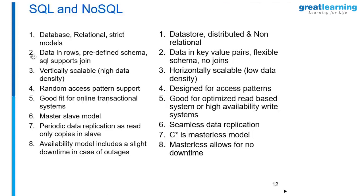A term to be used in the case of NoSQL is called write-time join versus read-time join. Every time a relational database has to pick this record, pick that record, put them together and return it back to you - and for values which don't change, you are continuously joining them again and again. The manager relationship doesn't change - so why are you joining again and again?